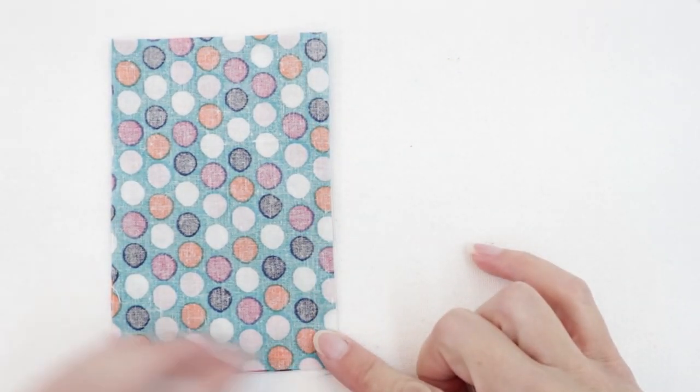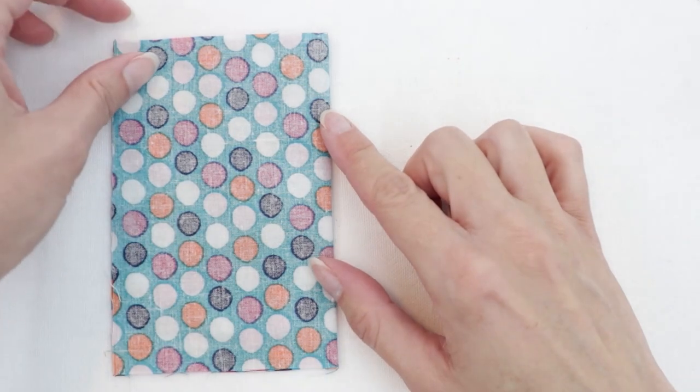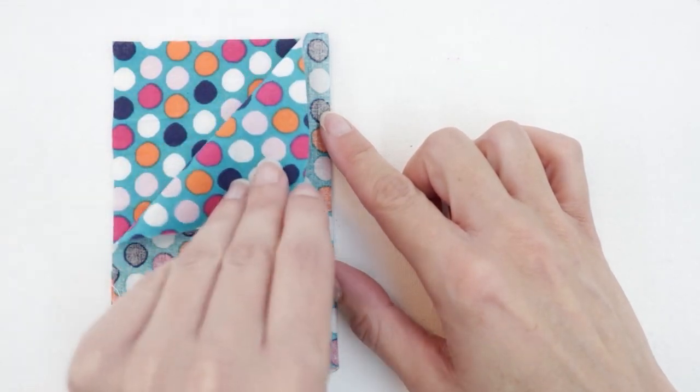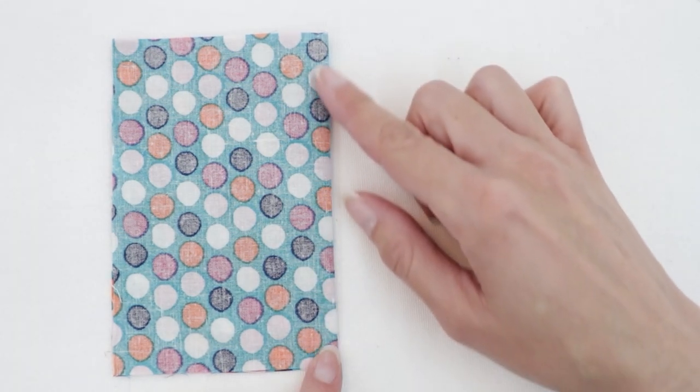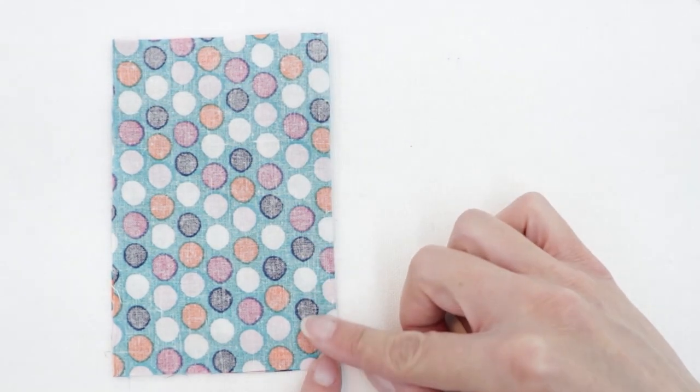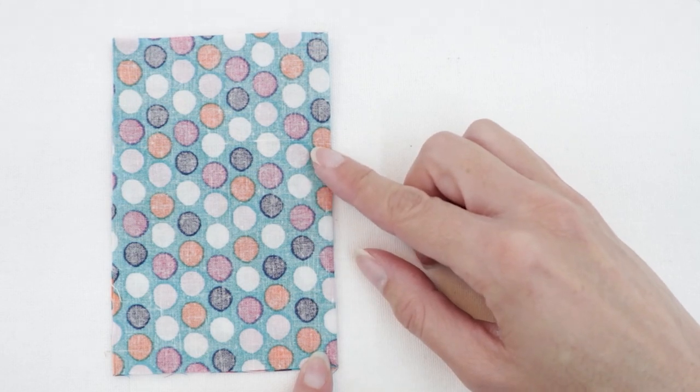Then I'm going to sew one more time, this time with my fabric right sides together. I'm going to sew along the exact same edge as before but this time I'm going to use a bigger seam allowance so I'll trap my raw edges inside.